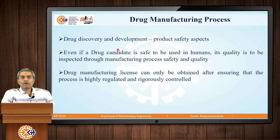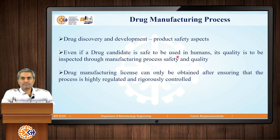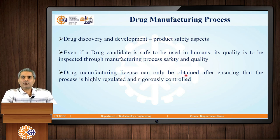When we talk about the drug discovery and development approach, it only considers the product safety aspects — that is, whether the drug is safe for humans or not. However, even if a drug candidate is safe to be used in humans, its quality is to be inspected through manufacturing process safety and quality. A drug manufacturing license can only be obtained after ensuring that the process is highly regulated and rigorously controlled.